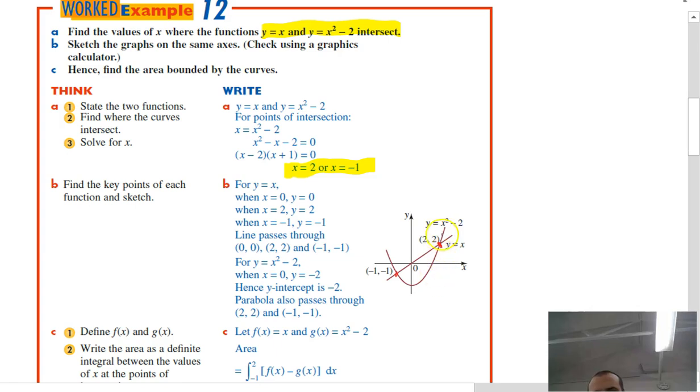And it says, sketch the graph and hence find the area bounded by the curve. So the area bounded by the curve is this bit here, and that's the area between the two curves.